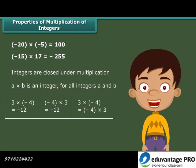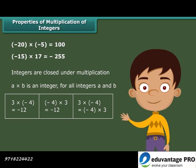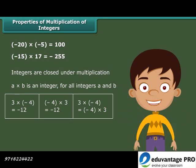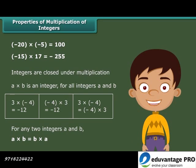Now, observe this example. We can say that 3 into minus 4 is equal to minus 4 into 3. Therefore, multiplication is commutative for integers. In general, for any two integers A and B, A into B is equal to B into A.